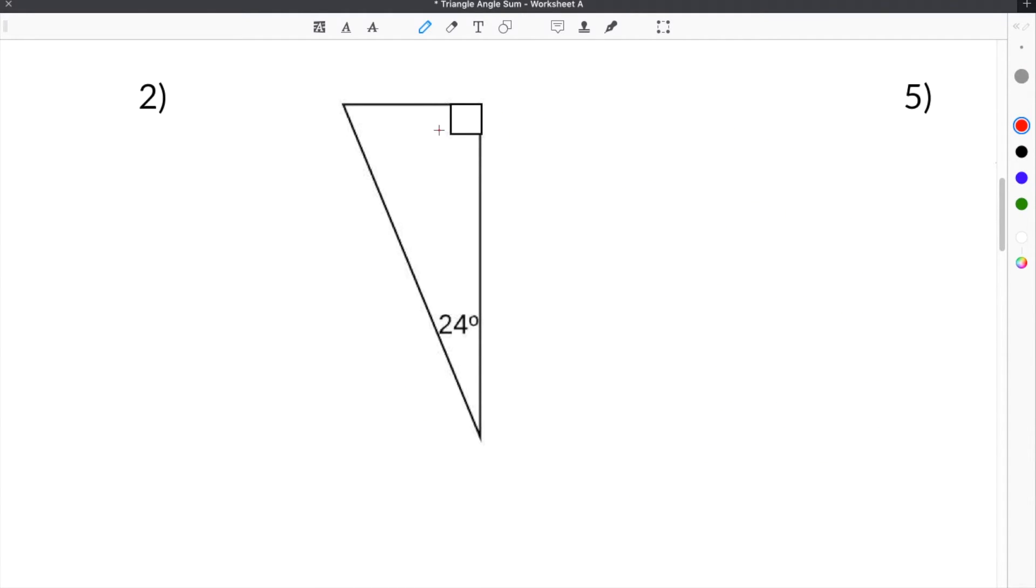Moving on to number 2, we're given a new triangle, and we're given 24 degrees here, and then we're given a right angle here. So all right angles are equal to 90 degrees.